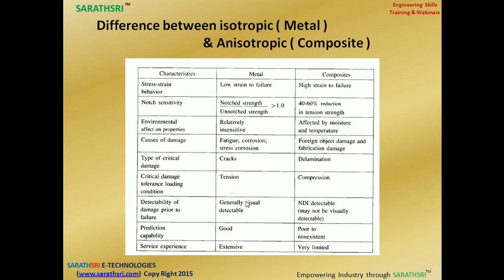From a characteristics standpoint: metal has low strain to failure while composites have high strain to failure. Metals are susceptible to fatigue and corrosion; composites have good fatigue resistance but can suffer fabrication damage. For metallic materials, damage manifests as crack initiation; for composites, it is delamination. In metallic materials the critical load is tensile; in composites the critical load is compressive, causing delamination. Service experience for metallic is extensive; for composites it is still relatively limited.